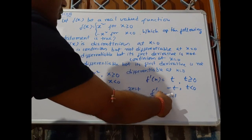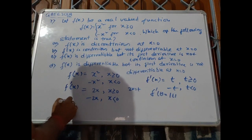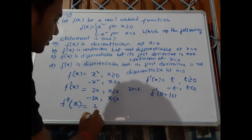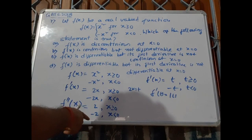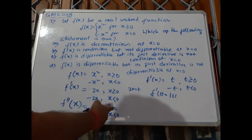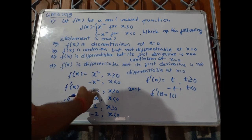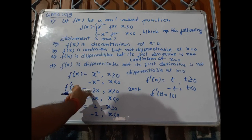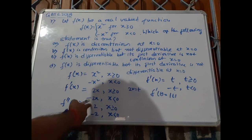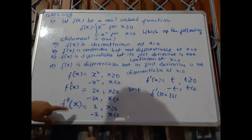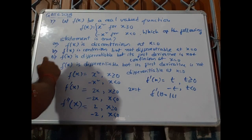When the first derivative is the modulus of some variable t, then it is differentiable. But when we take the derivative again, we get 2 for x greater than or equal to 0 and minus 2 for x less than 0. The right-hand derivative does not equal the left-hand derivative at x equals 0, so the first derivative is not differentiable at x equals 0. Therefore, the correct answer is option D.